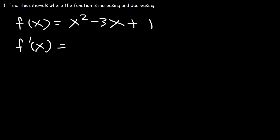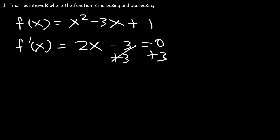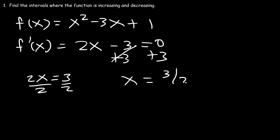The derivative of x squared is 2x and the derivative of 3x is 3. Now let's set that equal to 0. If we add 3 to both sides, 2x is equal to 3, and if we divide by 2, the only critical number we have in this example is 3 over 2.